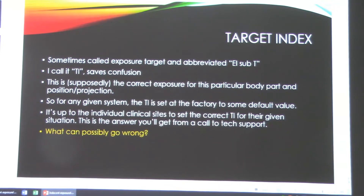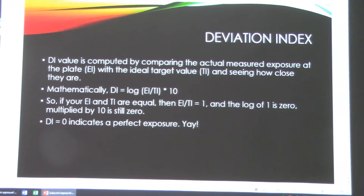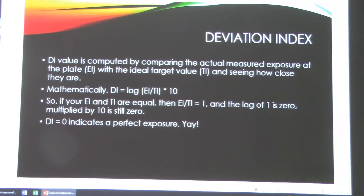So what can possibly go wrong? Deviation index. The deviation index is something that's calculated by the computer. What the computer does is it takes the actual exposure to the image receptor and compares that with the target value that is pre-programmed in for that particular histogram — chest, knee, ankle, whatever. Mathematically, the deviation index is the log base 10 of the exposure index over the target index, multiplied by 10. So if the EI over TI is equal to 2 — meaning your exposure index was double your target index — then the log of 2 is 0.3, because 10 to the 0.3 is 2.